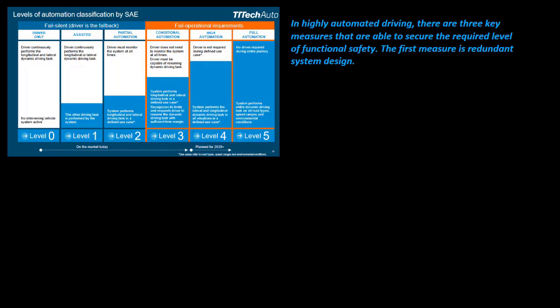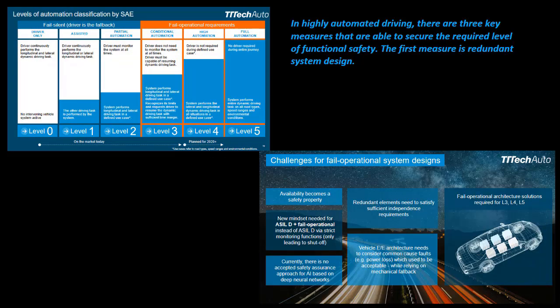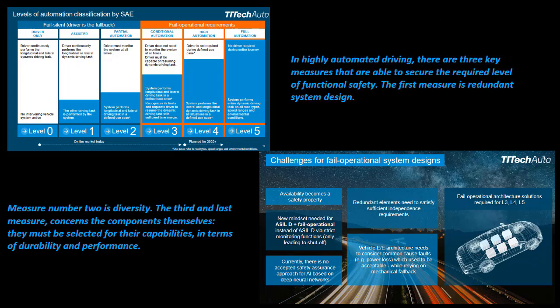There are three key measures that are able to secure the required level of functional safety. The first measure is redundant system design. Measure number two is diversity. The third and last measure concerns the components themselves - they must be selected for their capabilities in terms of durability and performance.